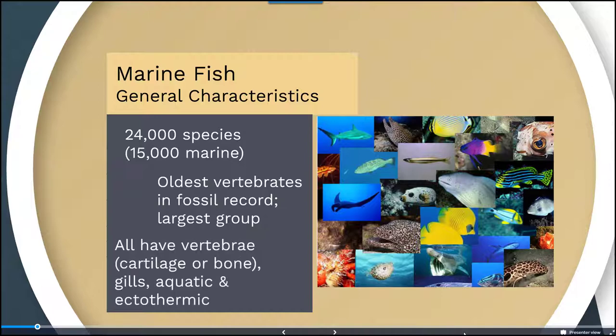They all have vertebrae made of either cartilage or bone. They all have gills, and they are aquatic and largely ectothermic.